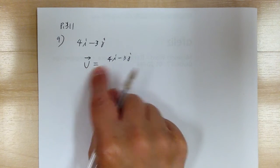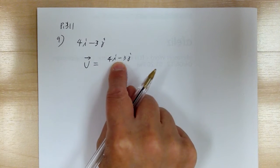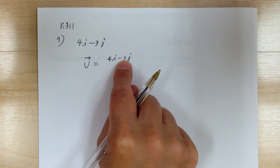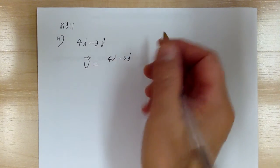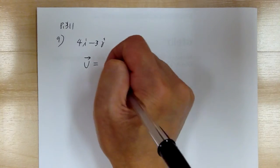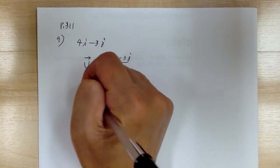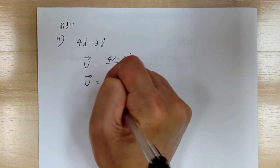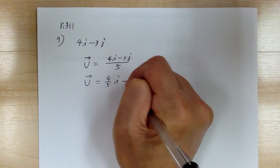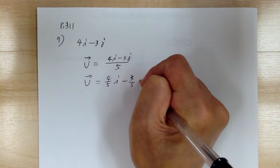Unit vector means length of 1. This is length of 5. You can use your Pythagorean theorem. This is length of 5, so to get to the length of 1 from 5, you have to divide by 5. So you have unit vector is equal to 4 over 5i minus 3 over 5j.